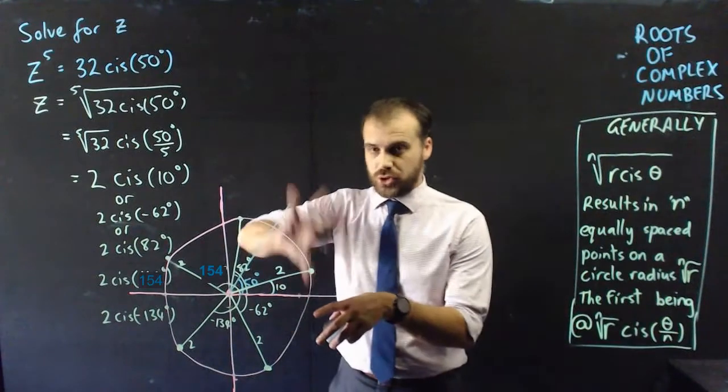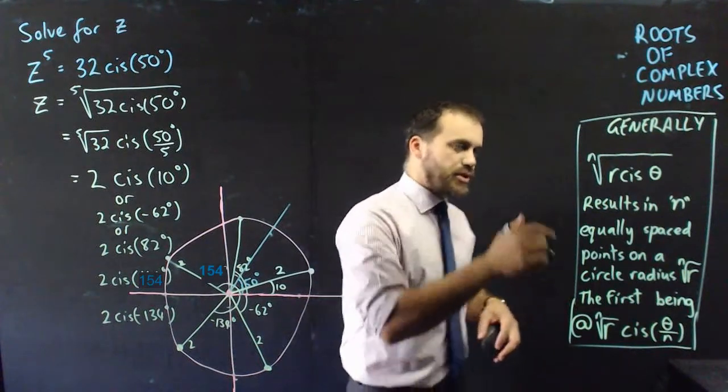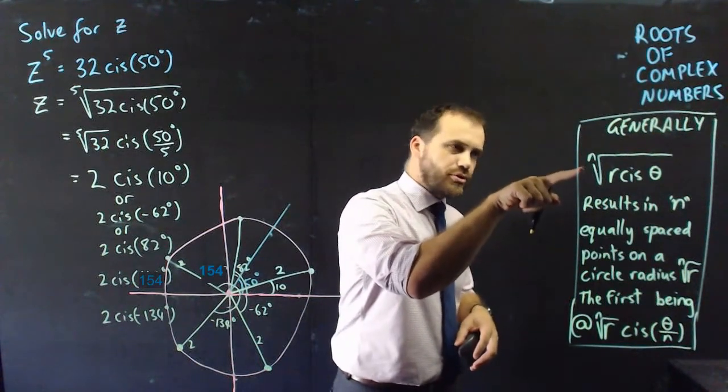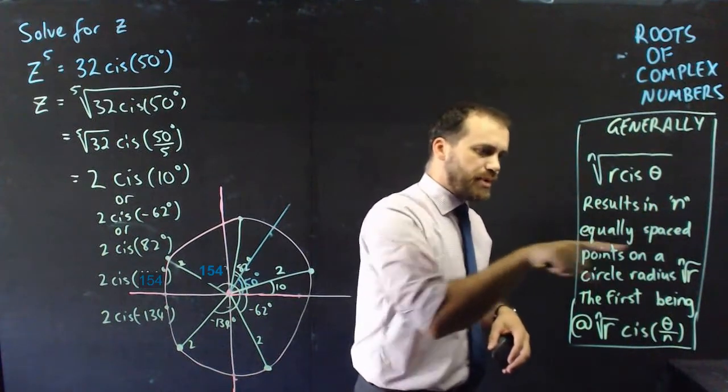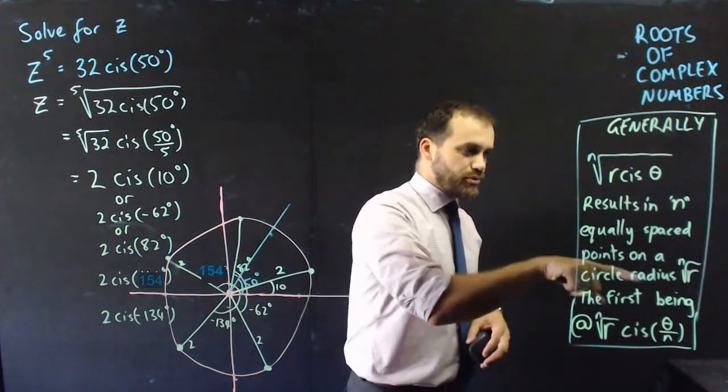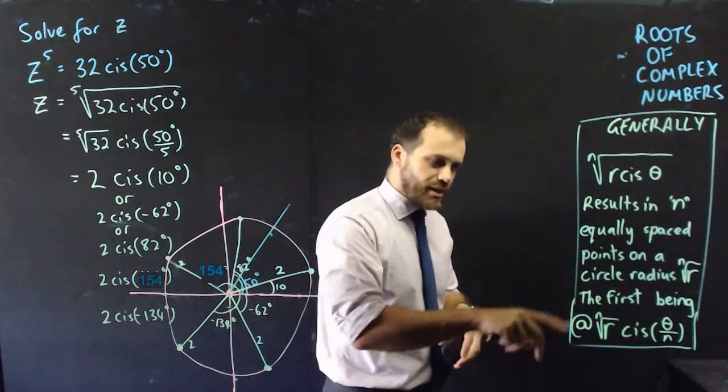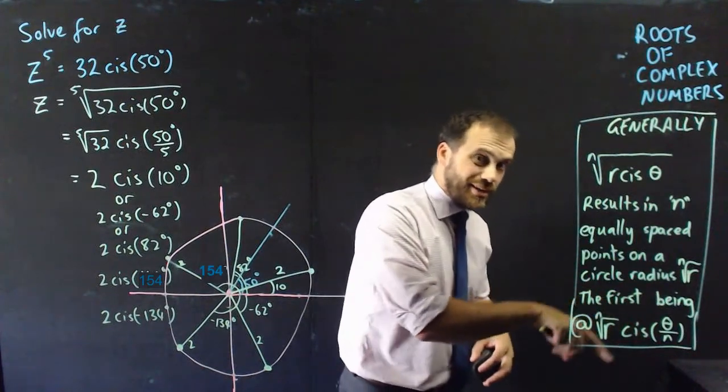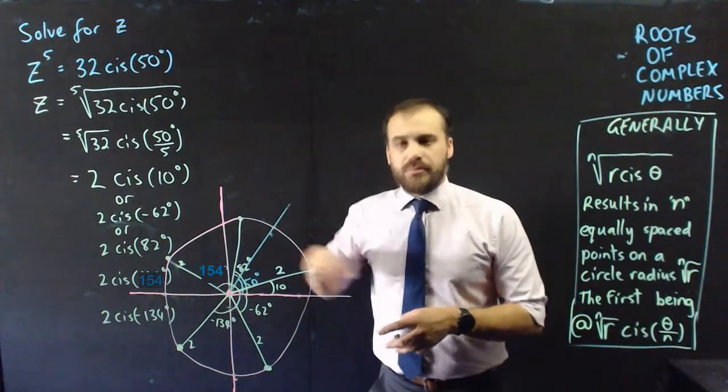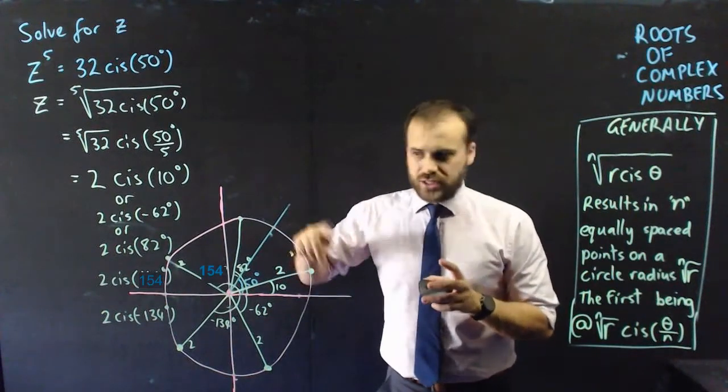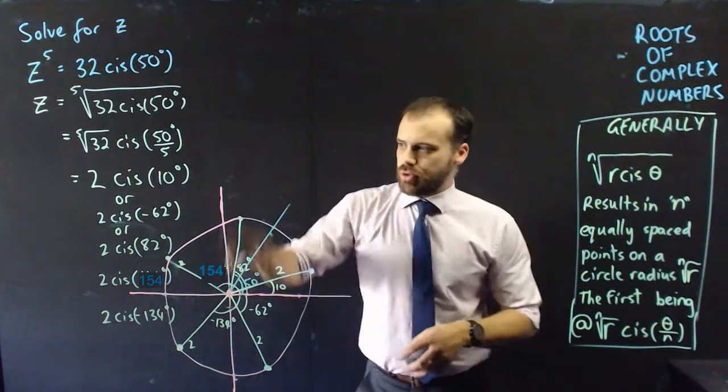It's just magical when you look at it geometrically. So it is very important that you understand this idea. But you really need to know this as well. We can say that the nth root of a complex number r cis theta results in n equally spaced points on a circle with radius nth root r, the first point being at nth root r cis theta on n. If you do that, then you can avoid moving your hand frantically around the circle, and you can work in a slightly different way.